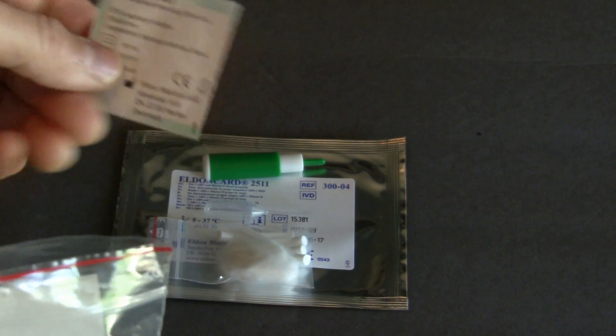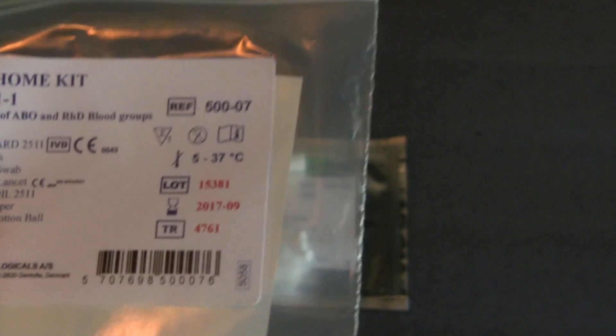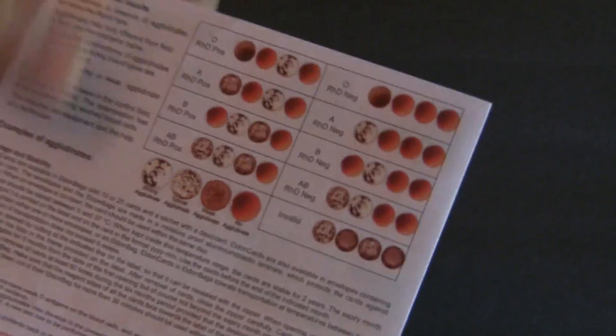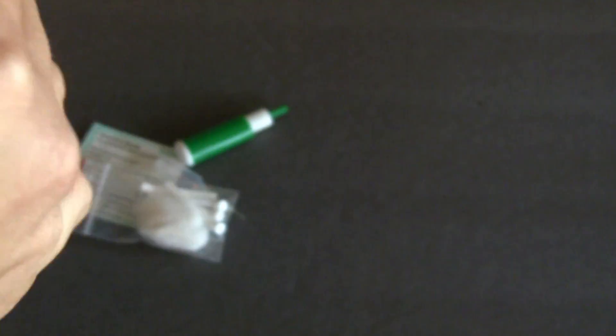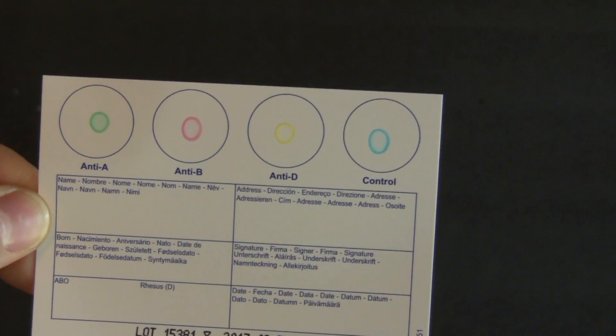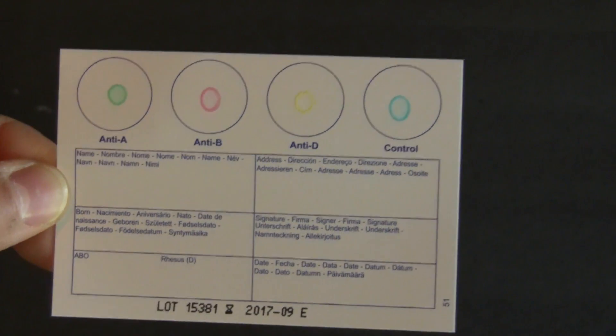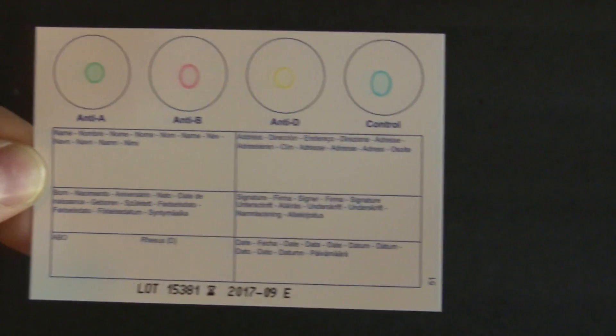And there's your alcohol swab instructions which came in the package. And we're going to use these to figure out what our blood type is. And that is what the Eldon card looks like. You're supposed to fill out all the info, your name and all that.